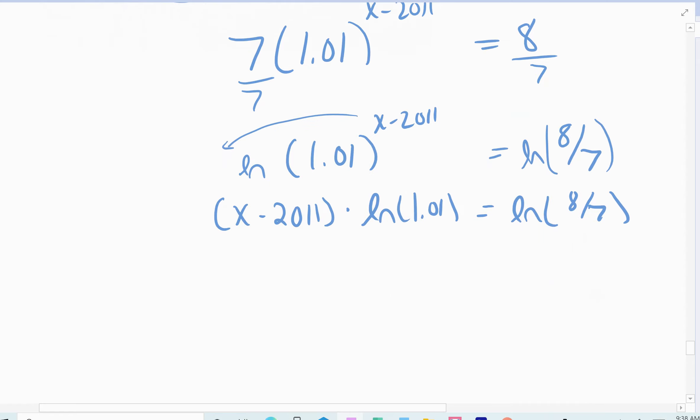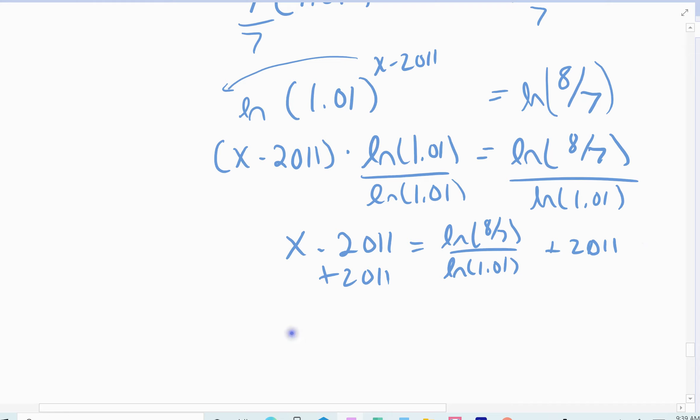And then solve that. So divide out by that natural log of 1.01. And so I've got x minus 2011 equals the natural log of 8/7 divided by the natural log of 1.01. Add 2011 to the other side. And so x is exactly the natural log of 8/7 divided by the natural log of 1.01. Remember, you can't simplify that. You have to leave it natural log of 8/7 separated divided by the natural log of 1.01 plus 2011.